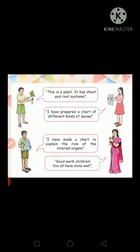First, one boy said: 'This is a plant. It has a shoot system and a root system.' The plant has two parts: the shoot system and the root system.